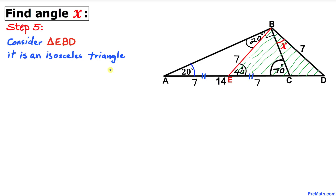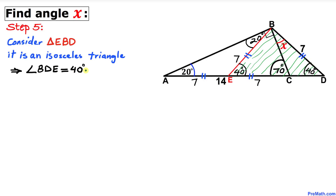Here's our next step. Let's consider triangle EBD. We know this is an isosceles triangle since BE equals BD, both 7 units. Therefore if angle BEC is 40 degrees, angle BDE has got to be 40 degrees as well. Thus angle BDE turns out to be 40 degrees.